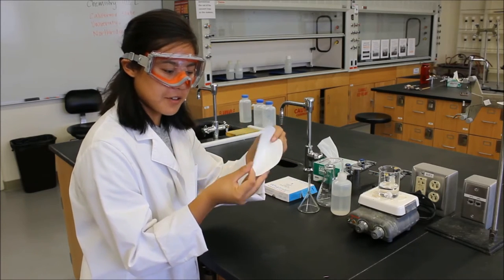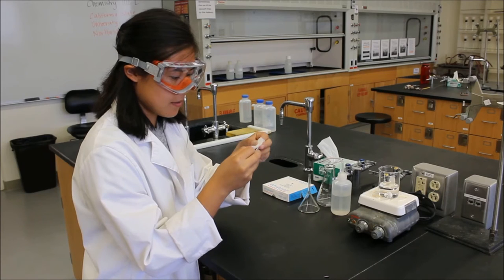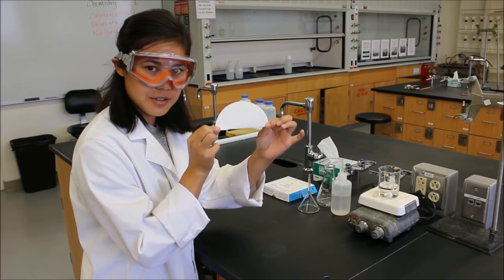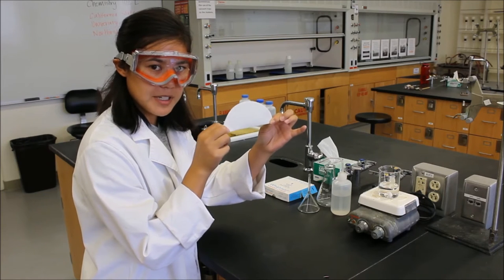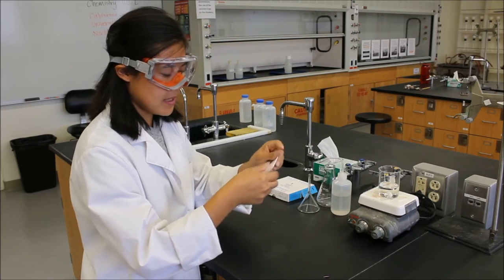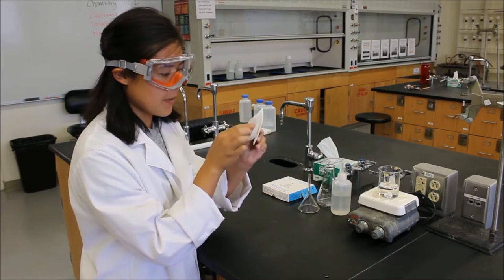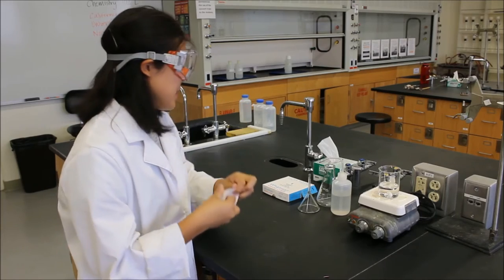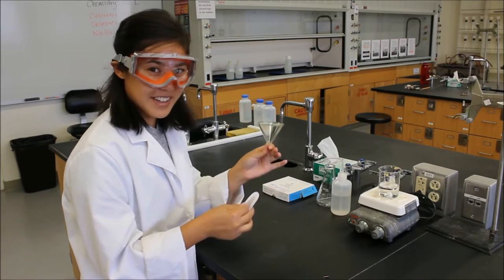And to fold it, we're going to fold it in half. So that makes a little half circle. We're going to fold it in half one more time to make a little quarter circle. Now that we have this, we just open one of these pockets. And we put it into our funnel.